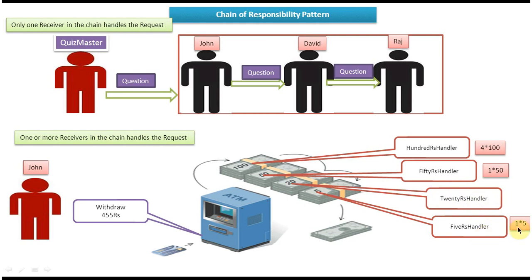The 5-rupee handler gives one 5-rupee note. So in total: four 100-rupee notes (400), one 50-rupee note (50), and one 5-rupee note (5) — totalling 455 rupees delivered. This is the best example of one or more receivers in the chain handling the request, where the request of 455 rupees was handled by multiple handlers: the 100-rupee handler, 50-rupee handler, and 5-rupee handler.